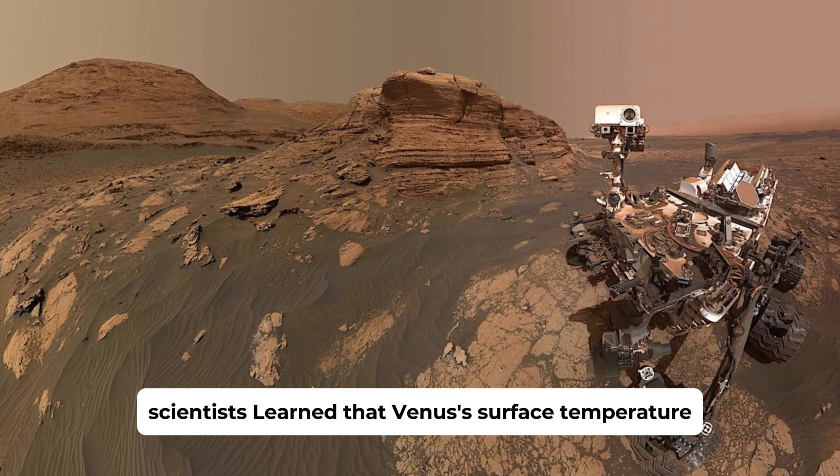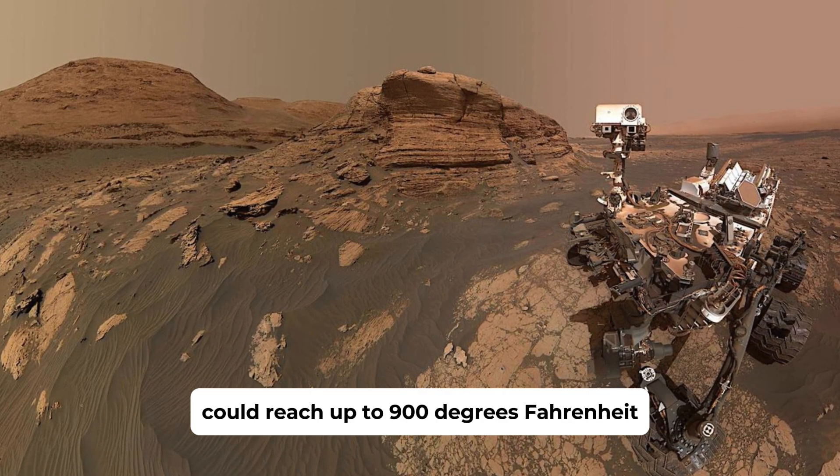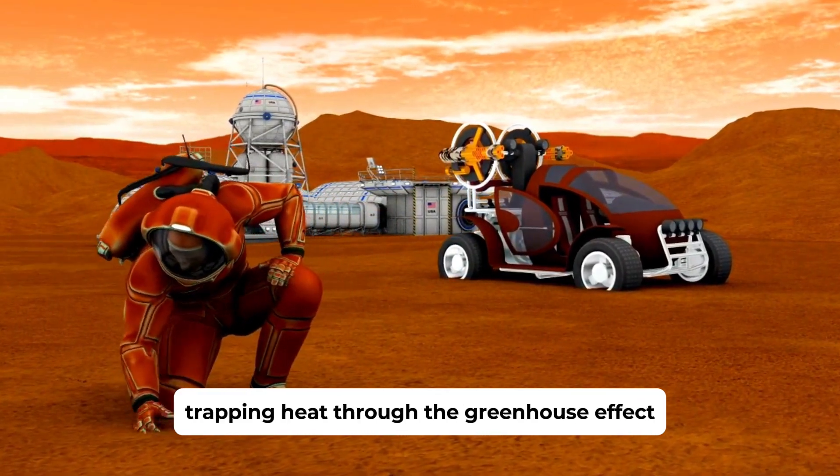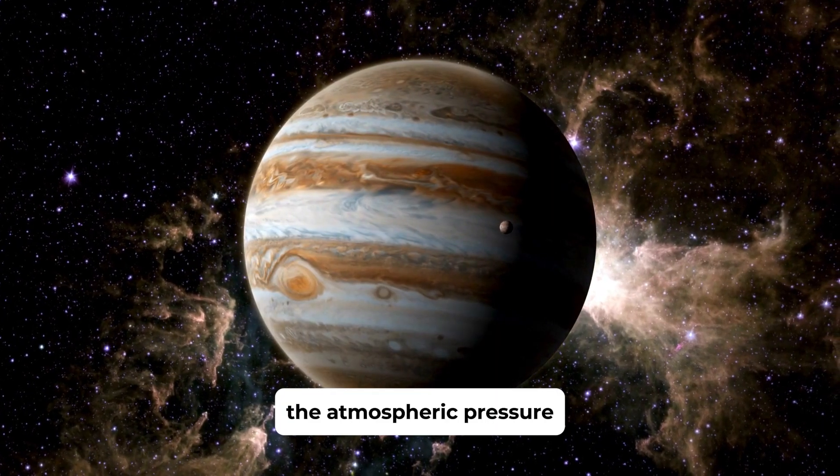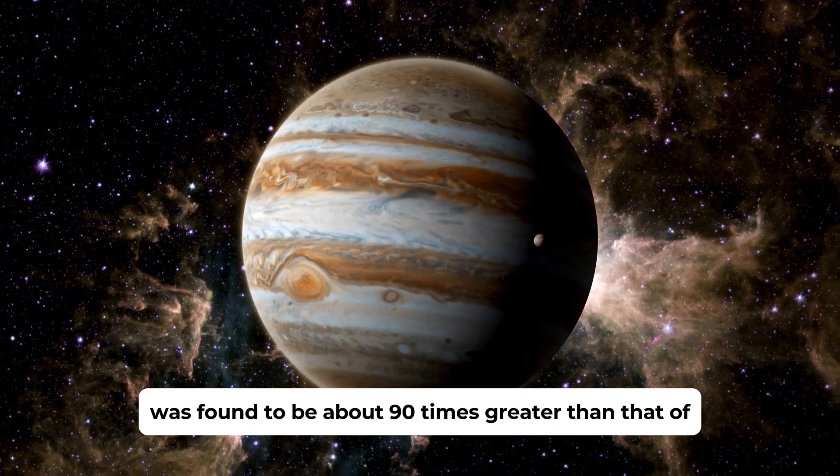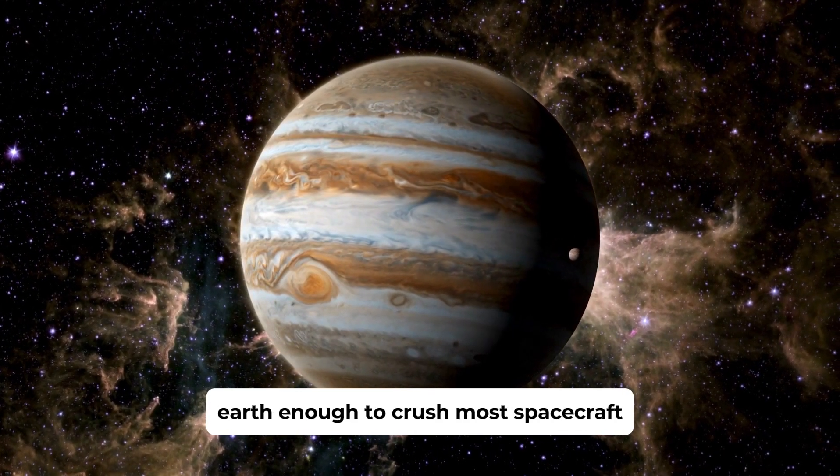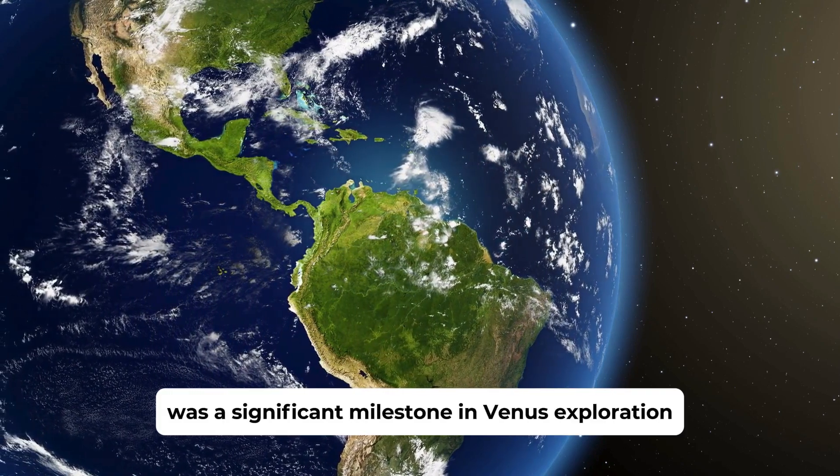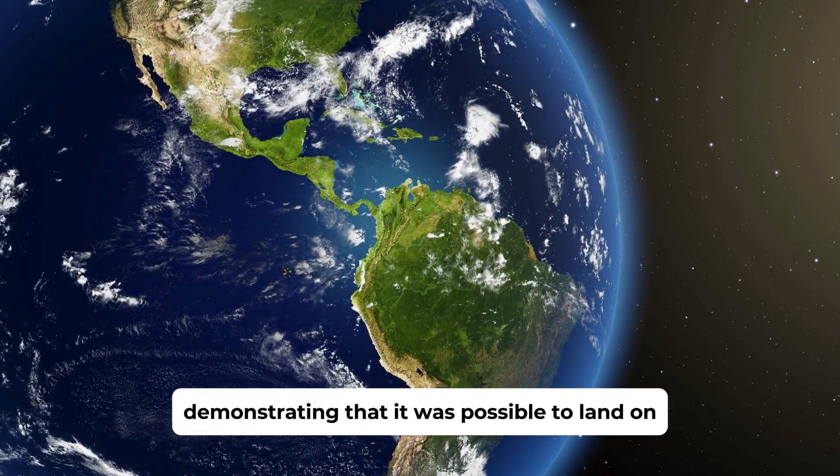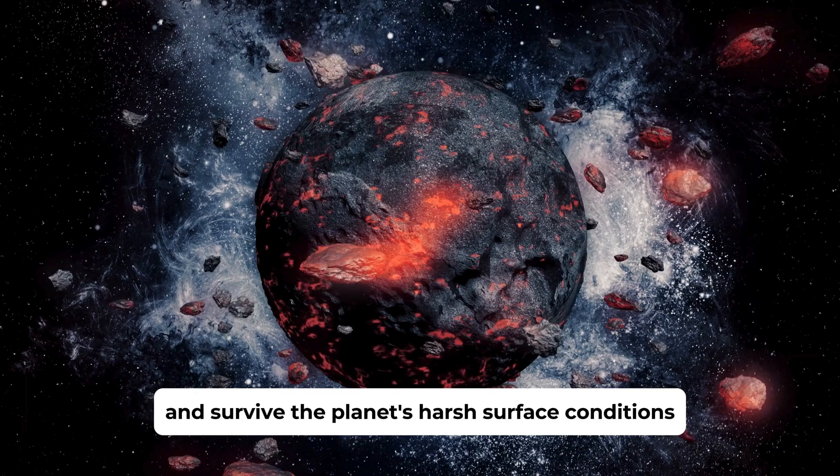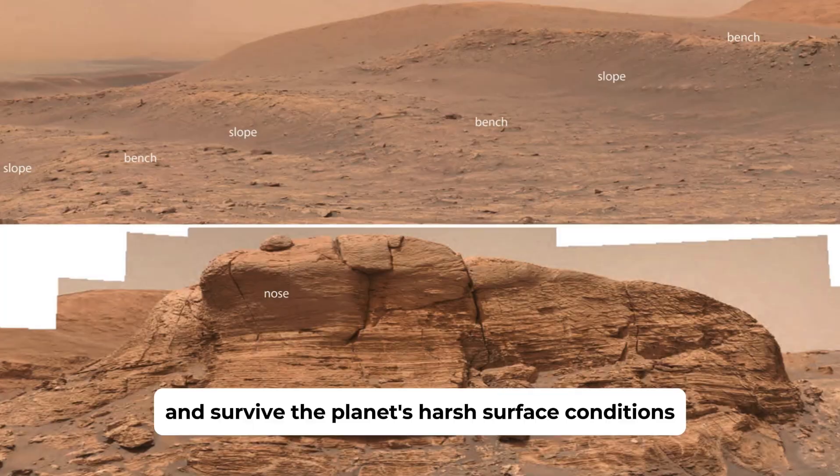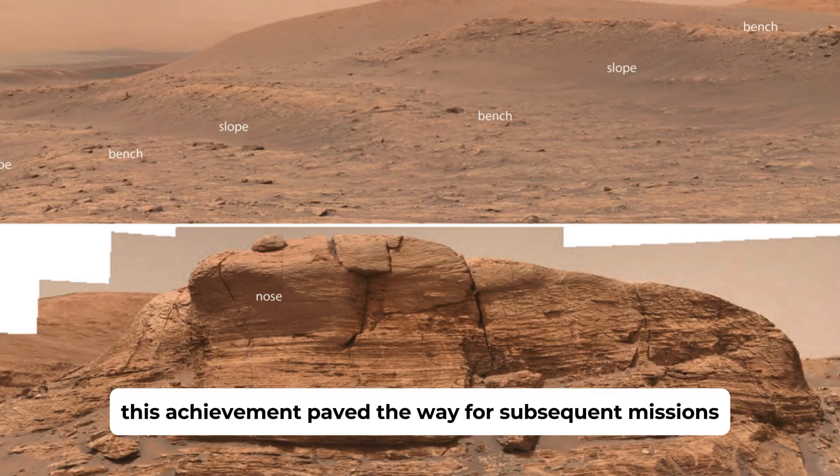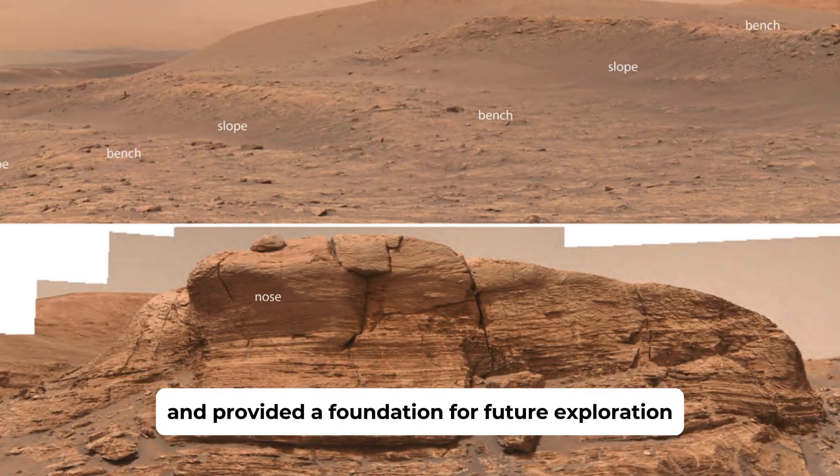The data transmitted by Venera 7 revealed crucial information about Venus's temperature, atmospheric pressure, and density. Scientists learned that Venus's surface temperature could reach up to 900 degrees Fahrenheit, a result of the planet's thick atmosphere trapping heat through the greenhouse effect. The atmospheric pressure was found to be about 90 times greater than that of Earth, enough to crush most spacecraft. Venera 7's success demonstrated that it was possible to land on and survive the planet's harsh surface conditions, at least for a short time.